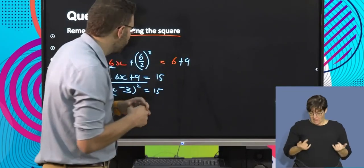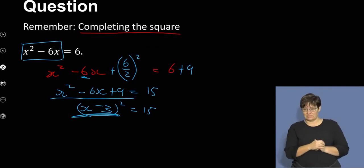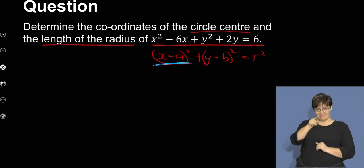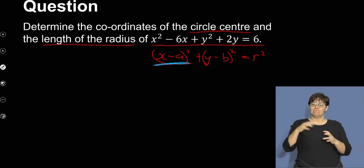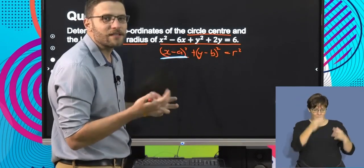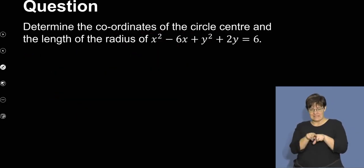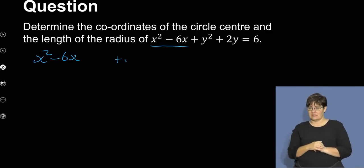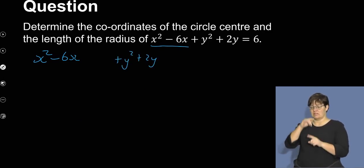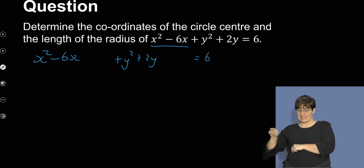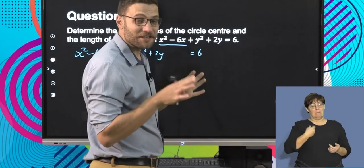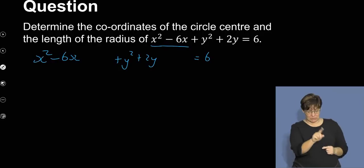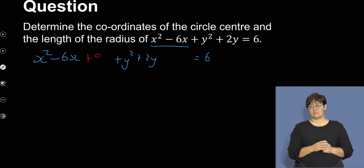Right now I want to take x squared minus 6x and change it into (x minus 3) squared, because that's what it's supposed to look like. Once I get it into that standard form, I can decide where the center actually is. I'm going to complete the square for the x's and complete the square for the y's — it's going to be quite long, so make sure you write it neatly. I've already completed the square for the x's, adding 9 on both sides.